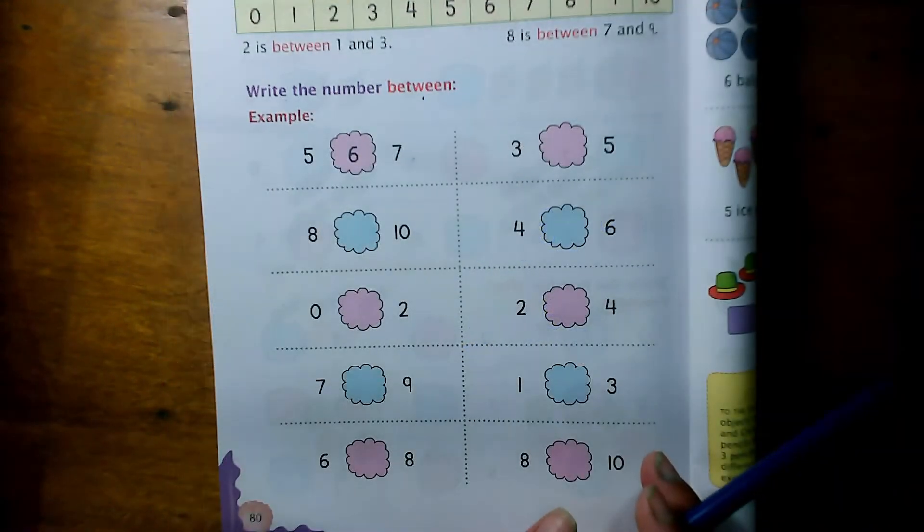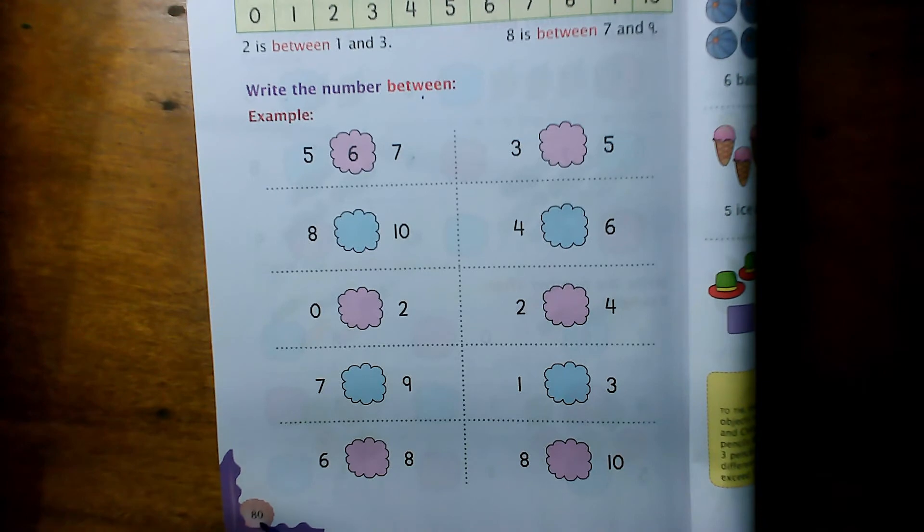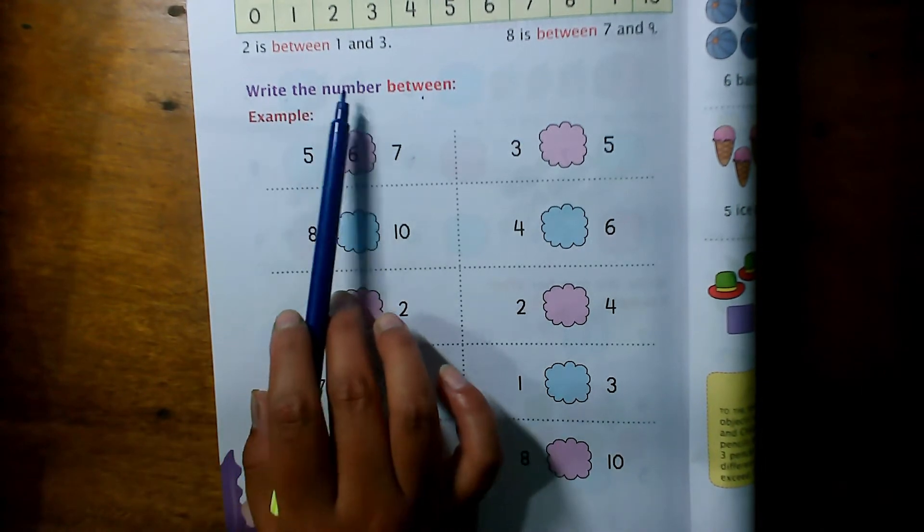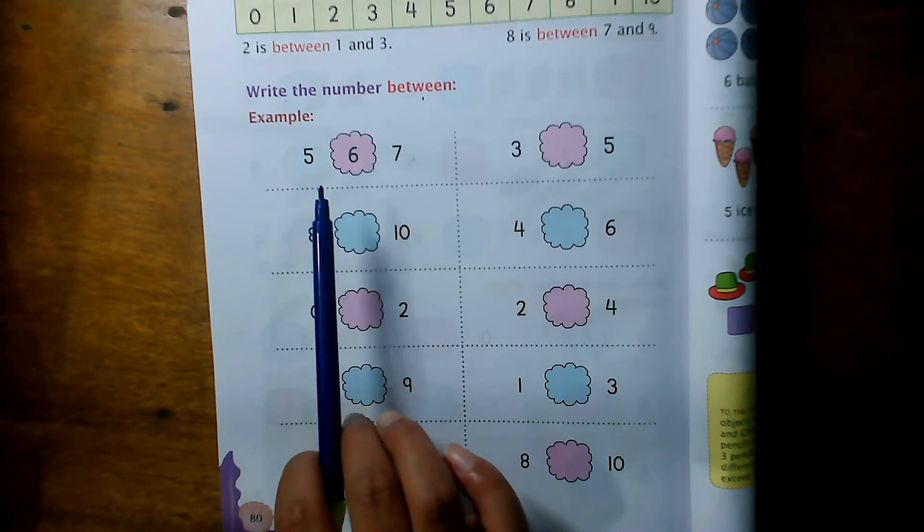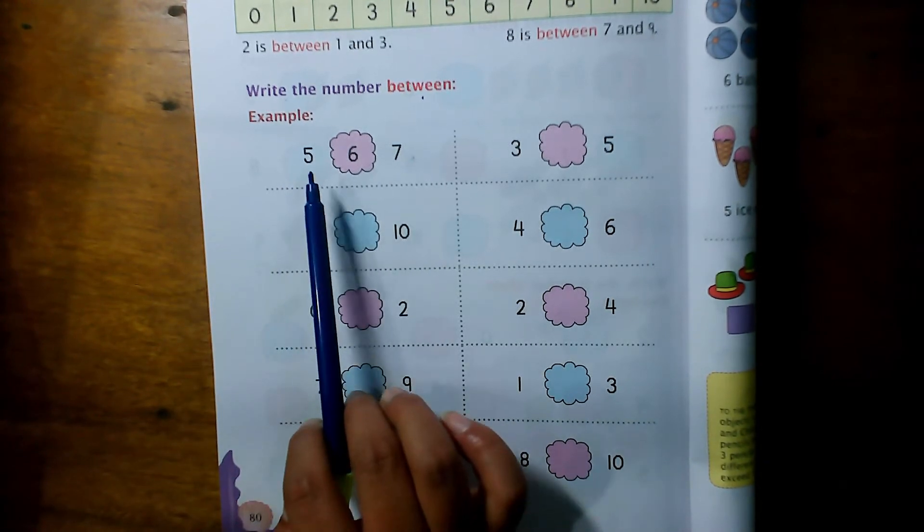For your home assignment, page 80, write the number between. Number ten yi kika'a, number umzu zi'yo. Example,